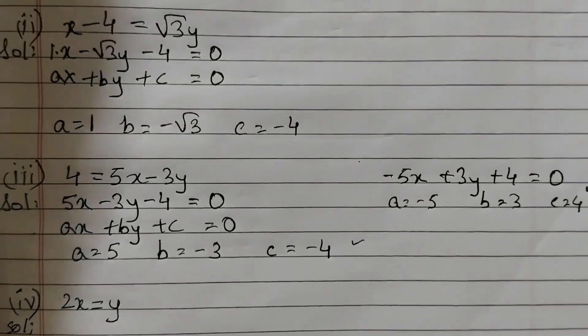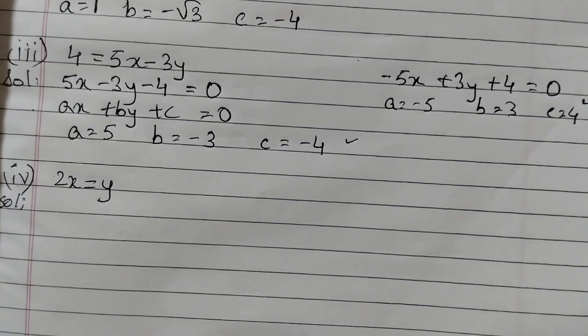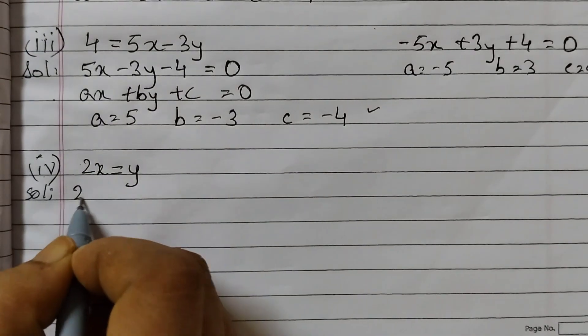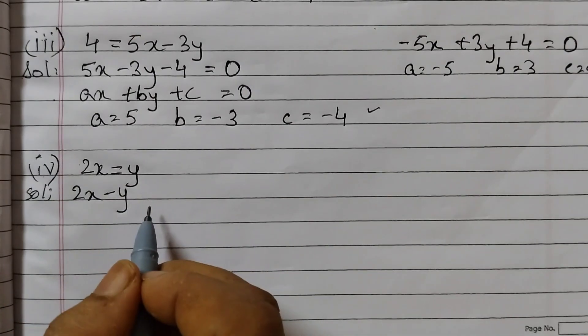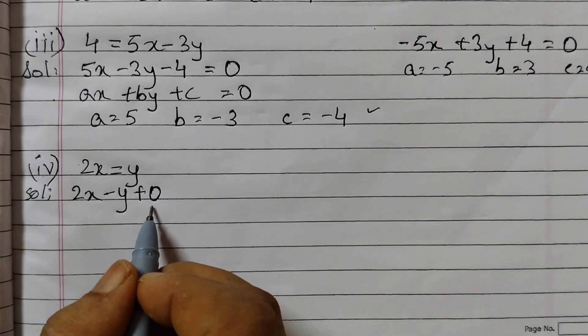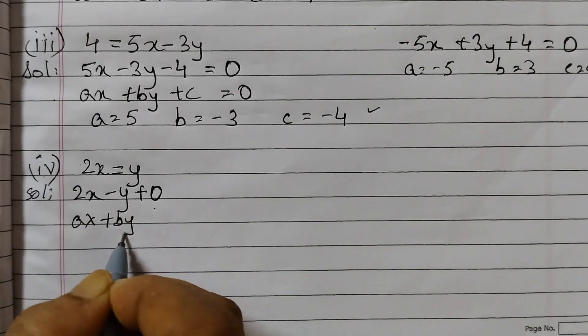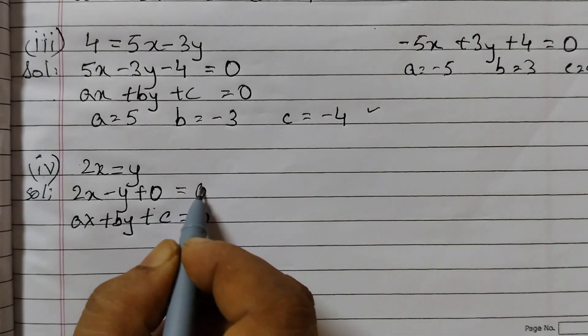And now the last one. 2x is equal to y. So 2x get y to this side minus y and there is no other term. So we will take that as 0. The constant term, we will take it as 0 because we need to write it in the form of ax plus by plus c equals to 0. So here this is equal to 0.